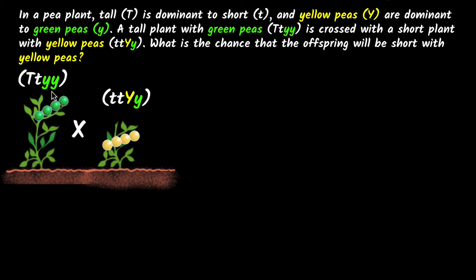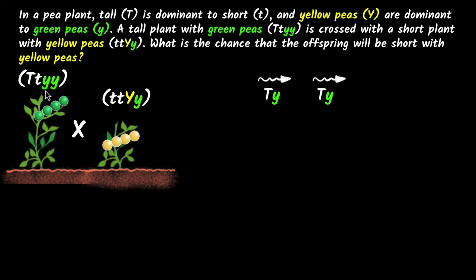Let's say this is the one that has the sperms and this is the one that has the eggs. Looking at the sperms: this capital T could combine with this small y to get one sperm. Similarly, this capital T can combine with this other y to get another sperm. You can also have this small t combining with this y to get another sperm, and this small t combining with this y to get another one. So we're looking at all the possible combinations because they assort independently.